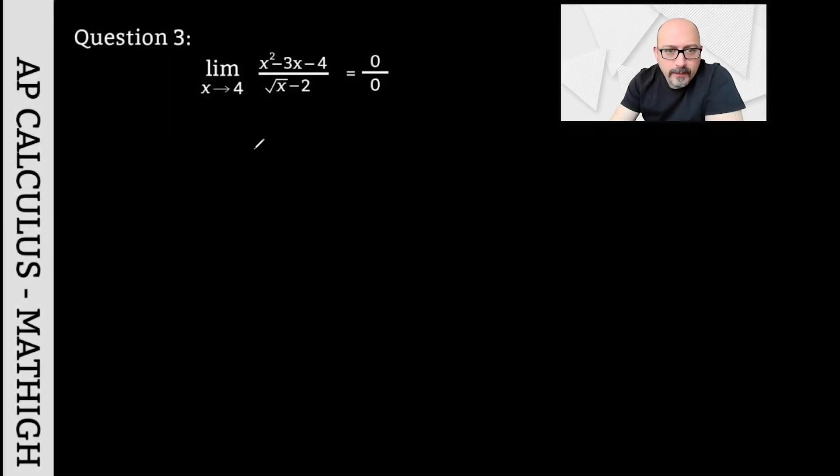The third question is, as x approaches 4, x squared minus 3x minus 4 divided by the square root of x minus 2. When you substitute 4 for x, I get 16 minus 12, which is 4, and from the top, 4 minus 4 gives me 0. Since the square root of 4 is 2, I find 0 from 2 minus 2.